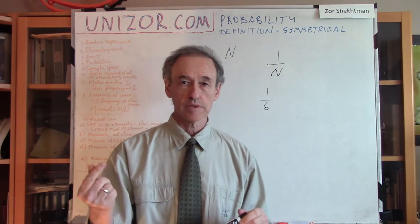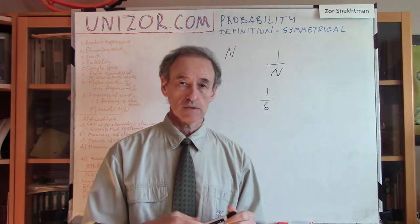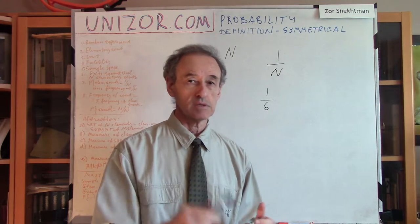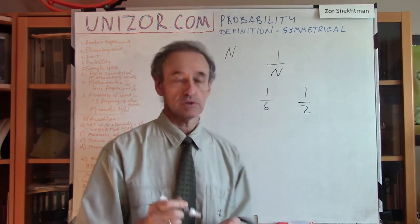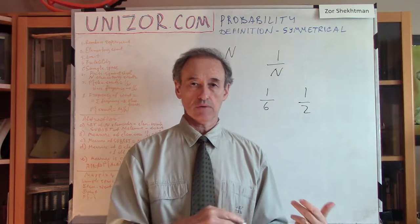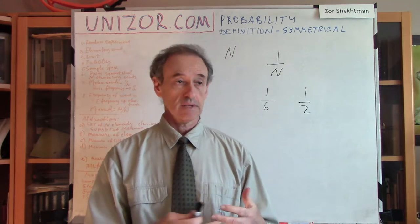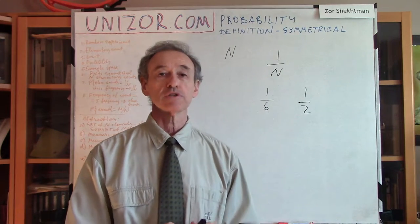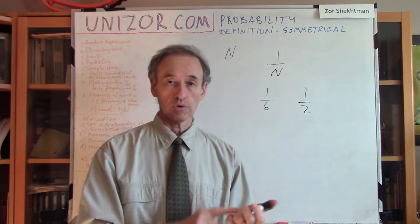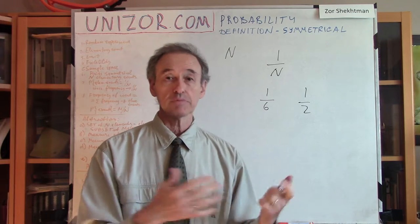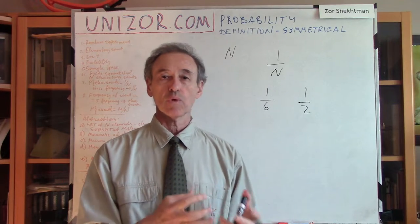Flipping a coin, we have two results — tails or heads — and again they have equal chances, which means we can associate one half as the probability of each elementary event. From these elementary events we can build other events, like: what's the probability of having an even number on top of the dice? Even means two, four, or six — basically a combination of certain elementary events. That's what we call an event.